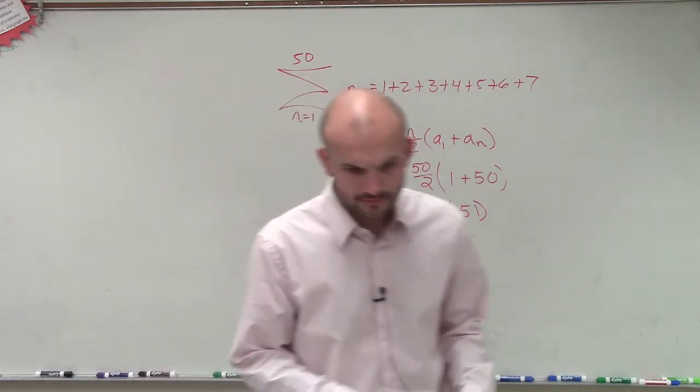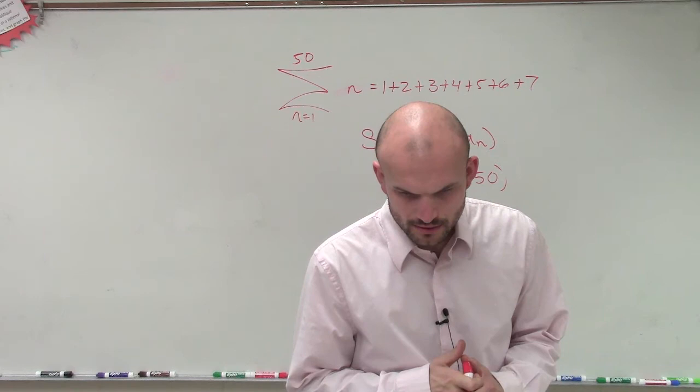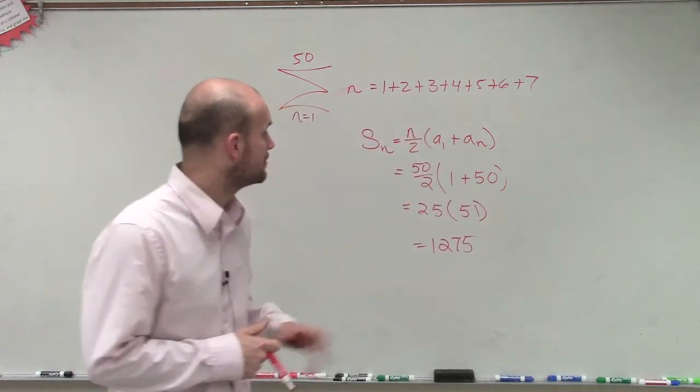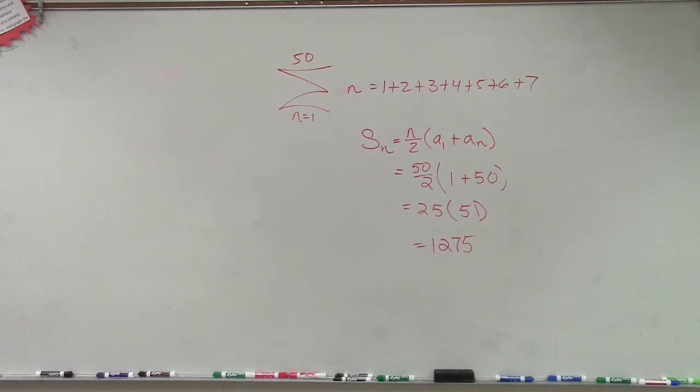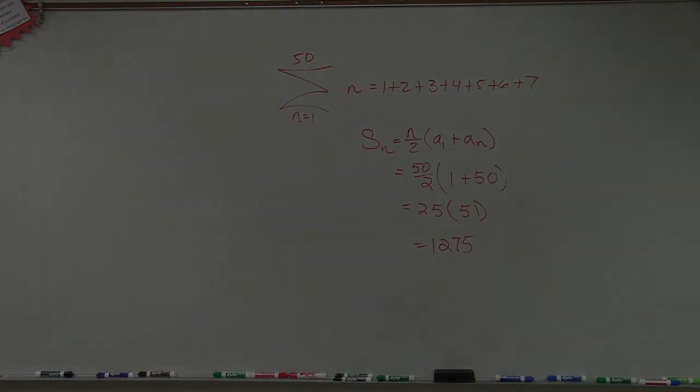That's not 1,275. I'm sorry? Wait. Now what if it's 60? 1,275. OK. That's it. You do the same thing? Just figure out what a sub 1 is, right? And then plug in what n is.